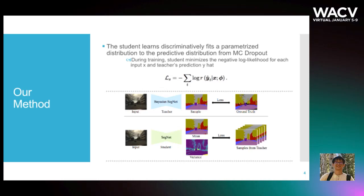Specifically, during training, the student minimizes the negative log-likelihood for each input x and teacher's prediction y-hat. The student is thus able to learn discriminatively to fit a parametrized distribution to the predictive distribution from the MC Dropout teacher. We use Laplacian distribution for regression tasks and logit-normal distribution for classification tasks.